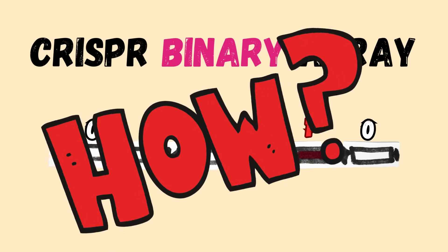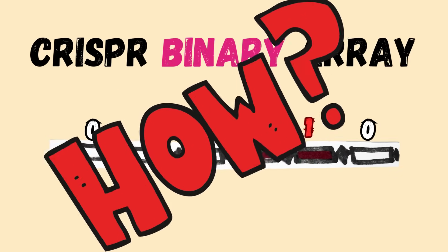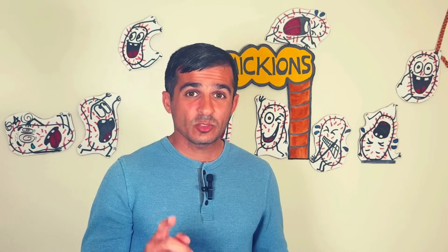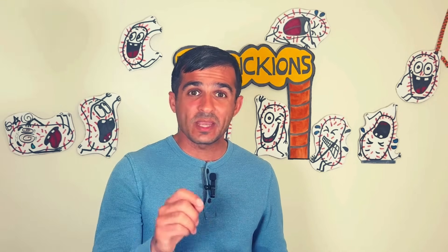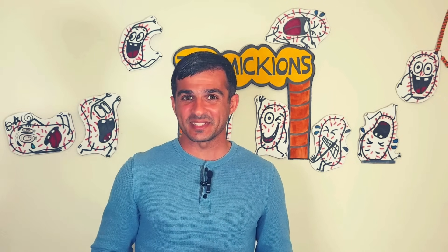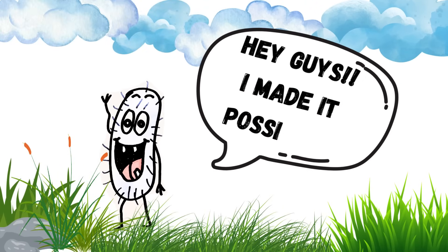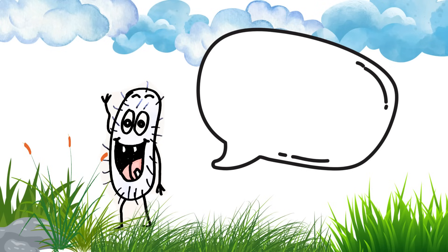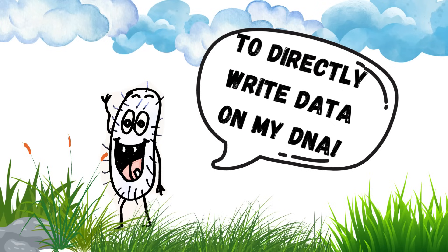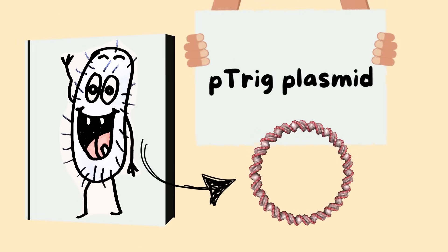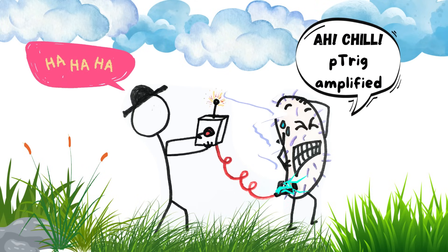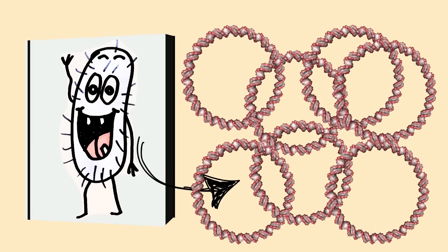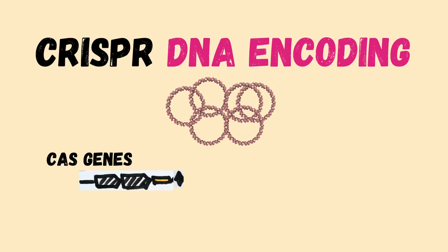Still, the question is how can it be done in practice? We need to control the bacterial cell to embed into the array a gene representing a binary one or zero exactly when we want, and this is the challenging part. This direct data writing on the genome of living cells was made possible by engineering bacteria with a specific plasmid called p-trick, which could readily be amplified in response to an electrical signal. Once the p-trick sequence was amplified in the cell, it could land into the DNA array using the CRISPR machinery, encoding a binary one value.